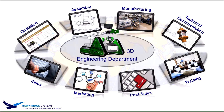There might be other groups within the company that need items from those models — say an exploded view, an animation, step-by-step content, or screenshots. Groups like marketing, sales, or tech pubs need these items but have to go through engineering to get any data from the models, because they're the only ones with access. And you don't want to give everyone access because they could also modify those models.